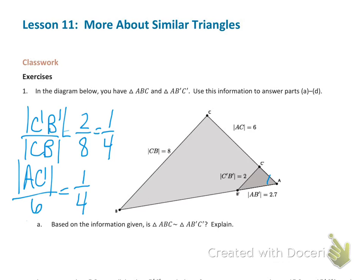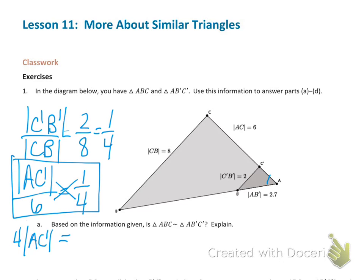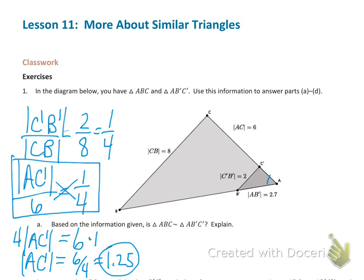One way to solve this is to recognize that when two fractions are equal, we can set their cross products equal. So four times AC' would equal six times one. The length AC' is equal to six-fourths, or 1.5. So the length of AC' is 1.5. You may have figured that out a different way — that's fine.